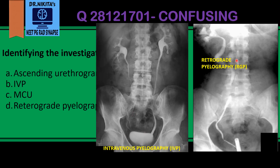In contrast, in retrograde pyelography, as the term says, it is retrograde — meaning we are going from down to up. This is done by putting a catheter in the lower ureter and then injecting the dye. In retrograde pyelography, we will see a catheter in the pelvis catheterizing the lower ureter, and we see opacification of the pelvic calyceal system.